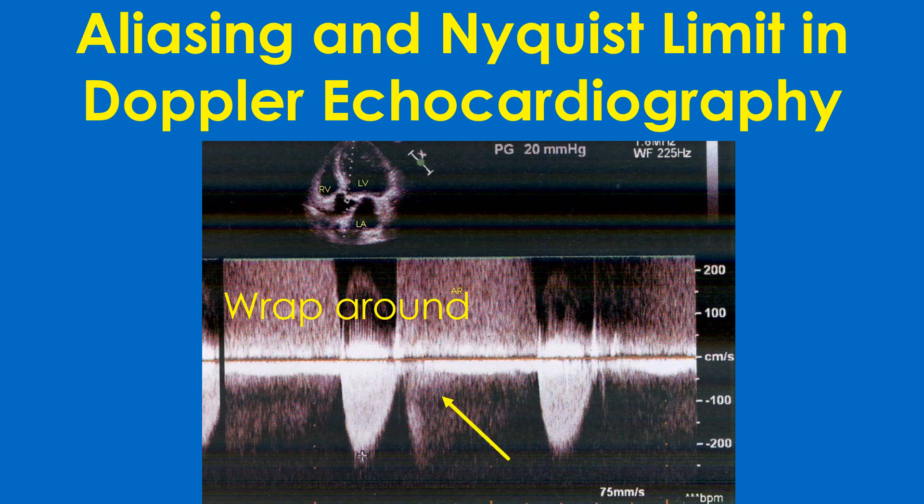In this high pulse repetition frequency Doppler recording showing an aortic regurgitation jet above the baseline, a cutoff is seen at the upper end with a wraparound below the baseline. Aliasing is seen here because the velocity limit has been set just above 200 cm per second while the actual jet velocity is higher than that.